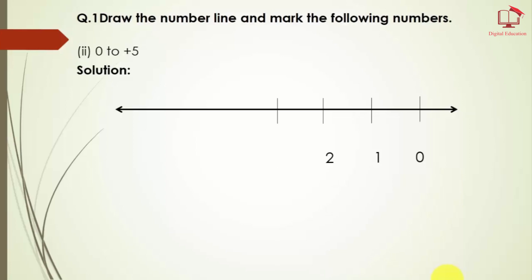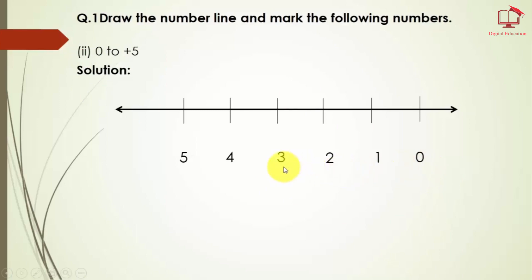This point is 3, this point is 4, and this point is 5. This is our question number 1. For part 2, we simply draw a line and mark the numbers 0 to 5 — you can see here: 0, 1, 2, 3, 4, 5.